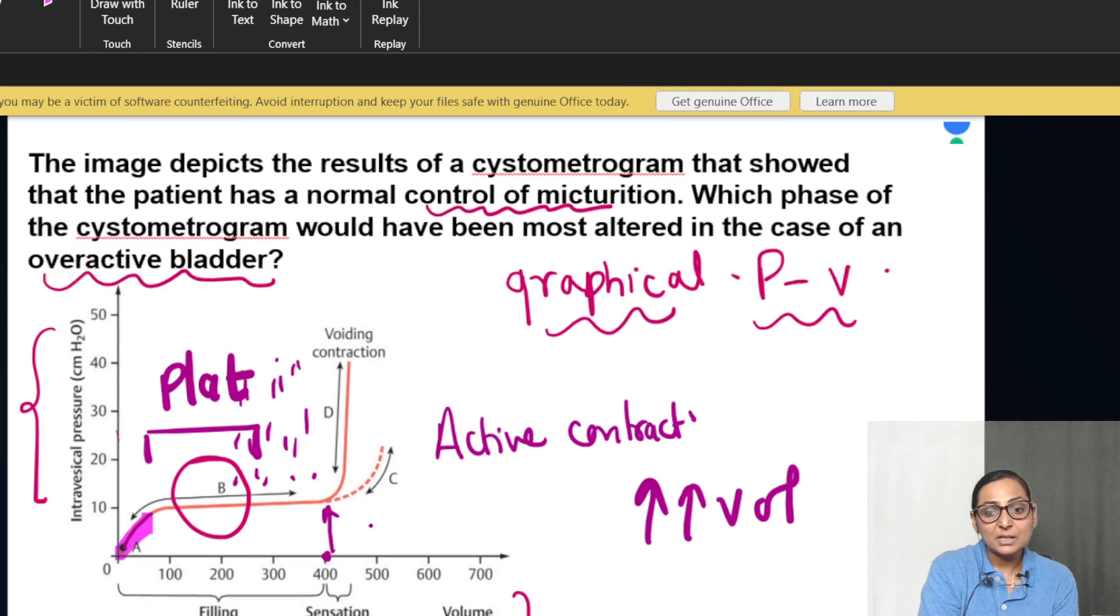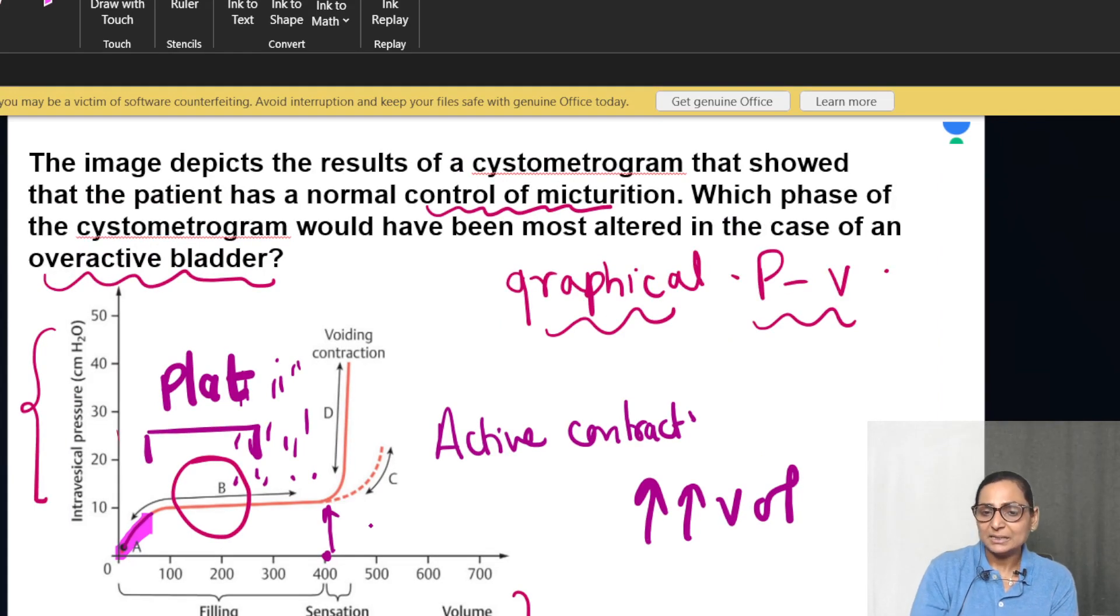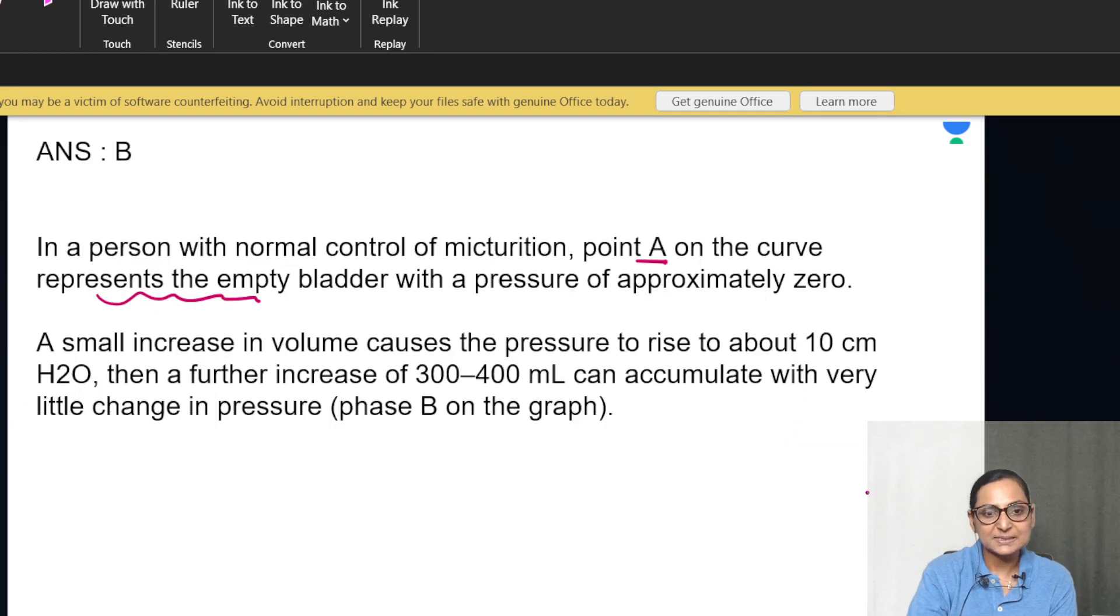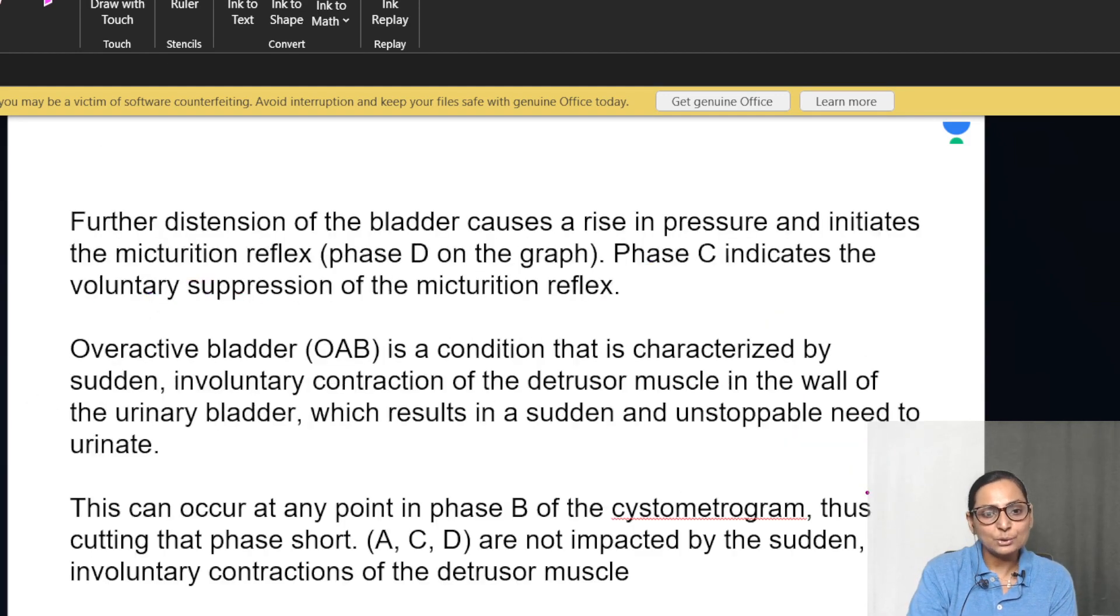This is the onset of the micturition reflex. Remember one important thing: this reflex has integrating center in the spinal cord. Stretch reflexes have integrating center in spinal cord, but defecation reflex and micturition reflex are two important visceral reflexes with integration center in spinal cord, although they have control from higher centers.